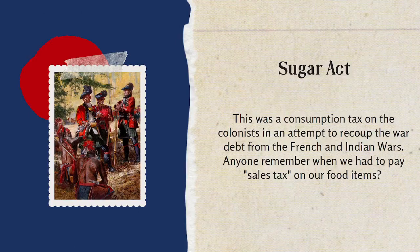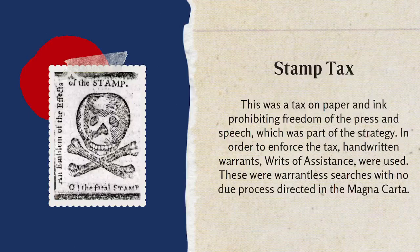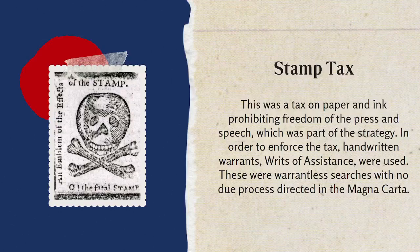What they formed was that the states would be taxed based on their profits and trade income, and that would fund any wars needed. The Stamp Tax was a tax on paper and ink, but the reason they put the tax on those two things was to prohibit freedom of the press and speech — it was all part of a strategy. In order to enforce the tax, handwritten warrants called writs of assistance were used — warrantless searches with no due process, which the Magna Carta had directed must be in place.